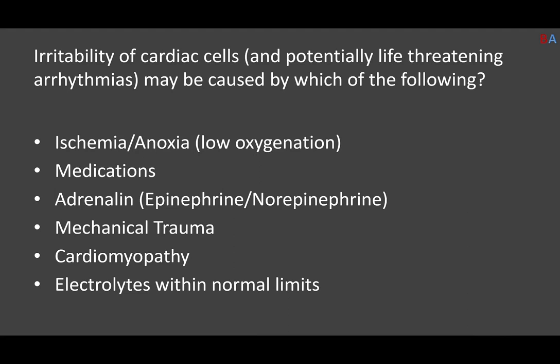Irritability of cardiac cells and potentially life-threatening arrhythmias may be caused by which of the following? Ischemia and hypoxia — that irritates any set of cells, particularly of concern. Medications will definitely cause this — methamphetamine is a really good one. Adrenaline, the natural system the body uses to speed up the heart, increases irritability. Mechanical trauma — bruising of the heart from a steering wheel or similar — could cause those cells to become irritable. Cardiomyopathy — stretching out that heart makes it misshapen, creating irritability. Electrolytes within normal limits — if everything's normal, it's not a problem. So electrolytes is the only thing on that list that is not potentially going to cause irritability of cardiac cells.